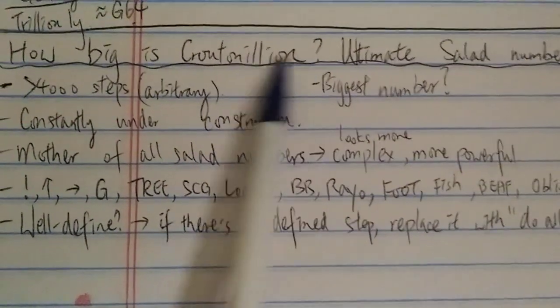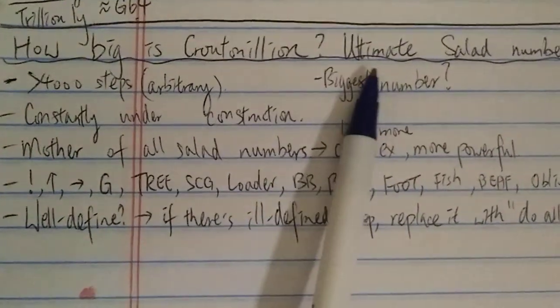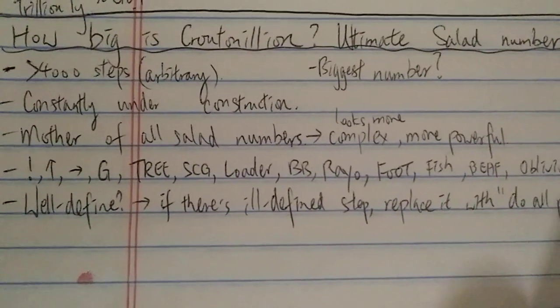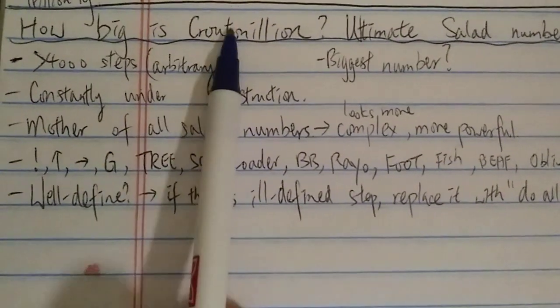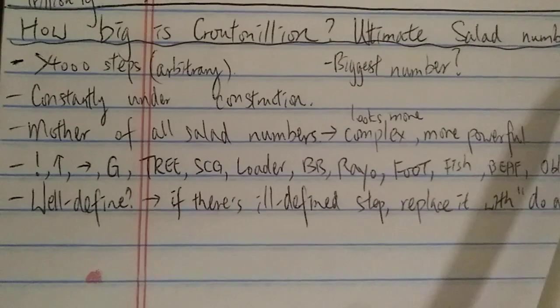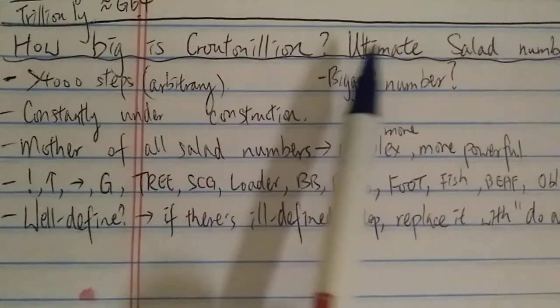But actually there is a number that exists on the Googleology wiki again, check that out. It has over 4,000 steps and none of those comments ever came close to it. People try to have the biggest number, but I have to say your number is nowhere near this number.